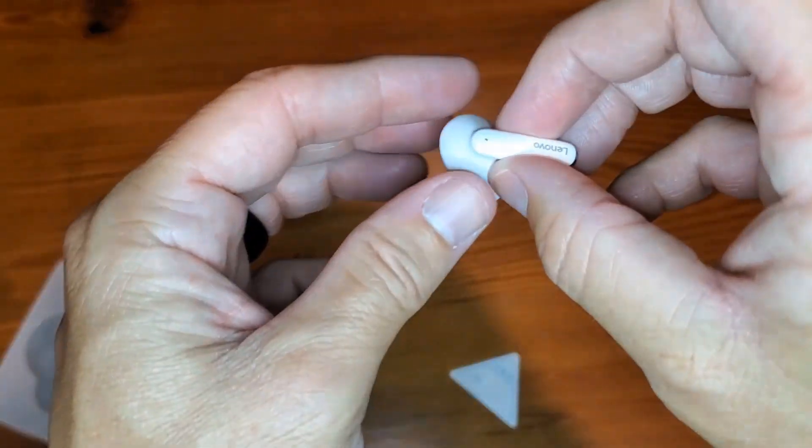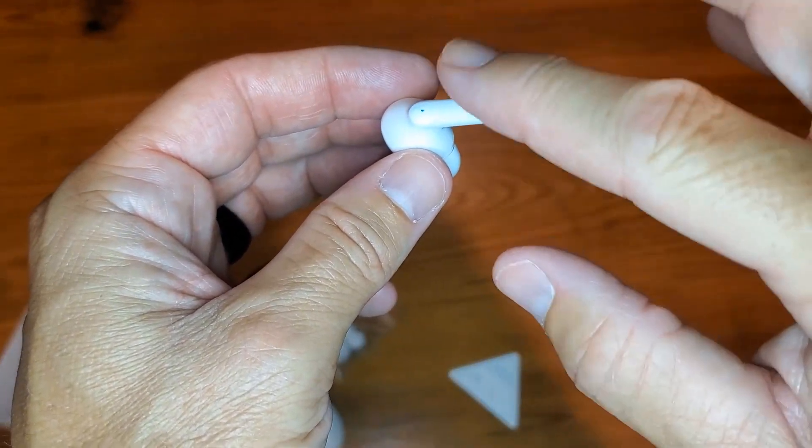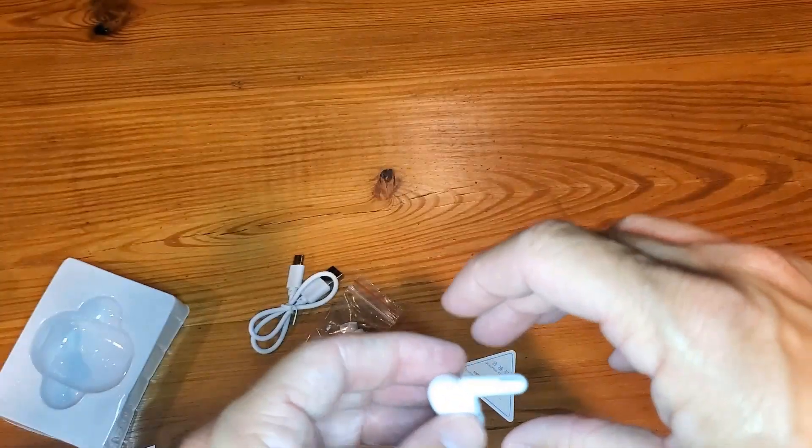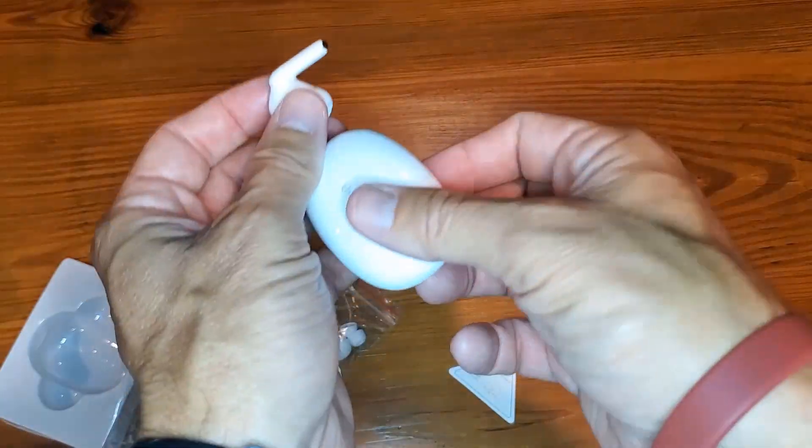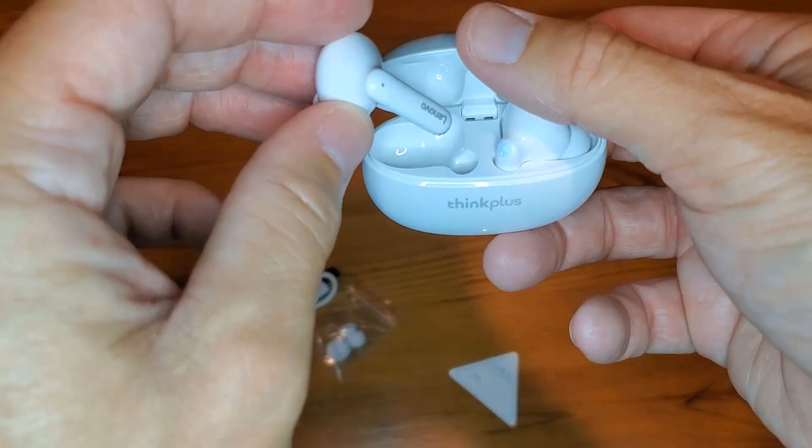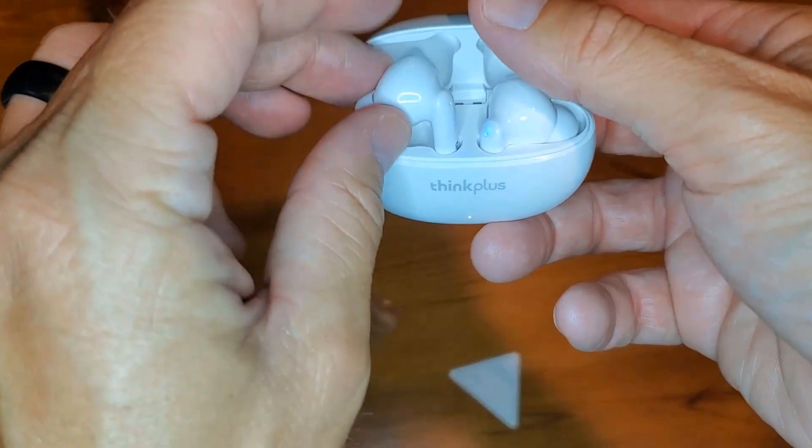Something else to know is that there's just a touch point, so all you've got to do is touch the side to turn it on. You can skip, pull up an assistant, you can do a number of different things with that, so that's obviously important as well.